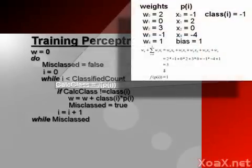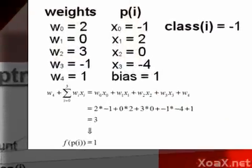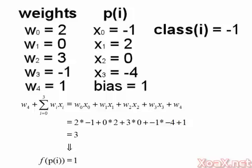For the purpose of illustration, we will assume some values for the weights, the current point, and the classification. Here we put the one that we showed in the inputs as a component of the point. This value is called the bias, and it gets multiplied by the weight w₀. The x's are the components of the point p. Class i is the class of the point.